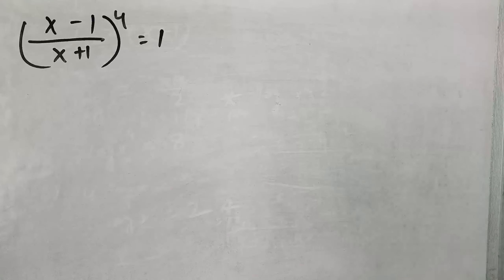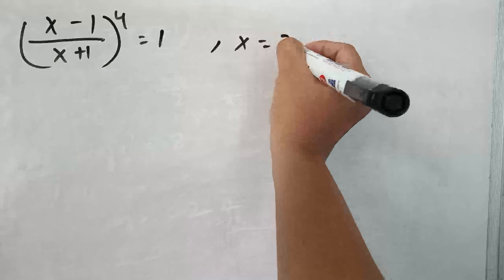So, the question is x minus 1 divided by x plus 1 to the power 4 equals to 1 and we have to find out the value of x here.